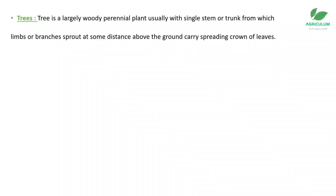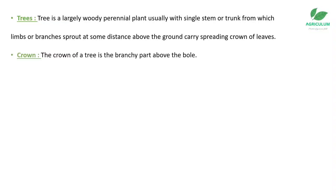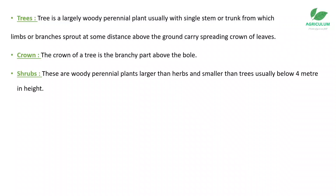The first term is tree. A tree is a largely woody perennial plant, usually with a single stem or trunk from which limbs or branches sprout at some distance, and the crown carries a spreading arrangement of leaves. The crown of a tree is the branchy part above the bole. Shrubs are woody perennial plants larger than herbs and smaller than trees, usually below four meters in height.